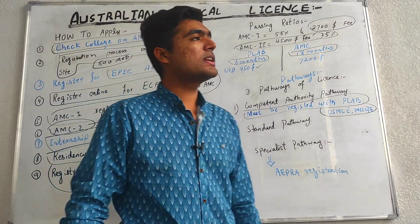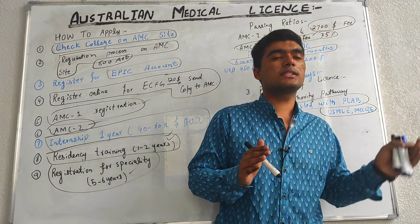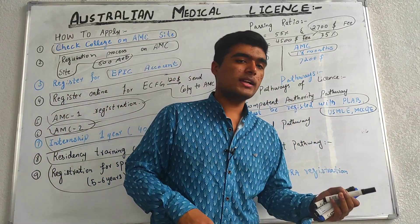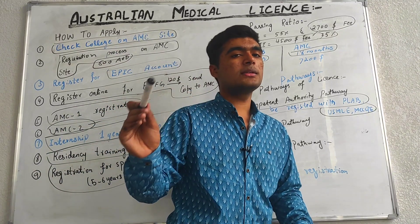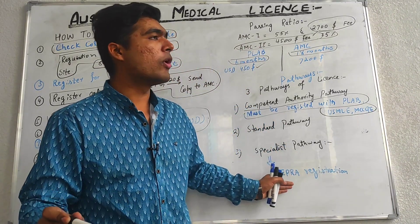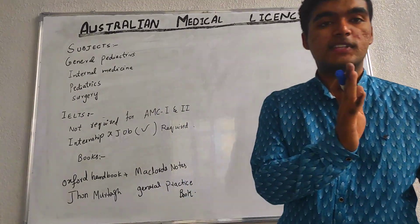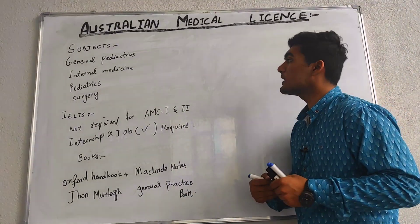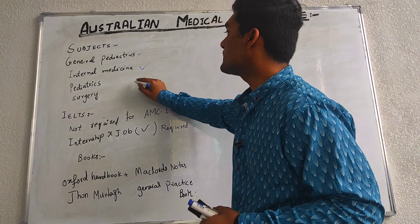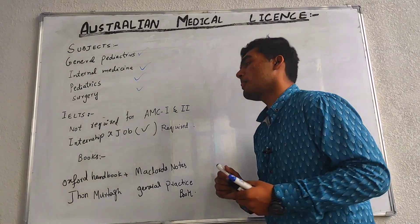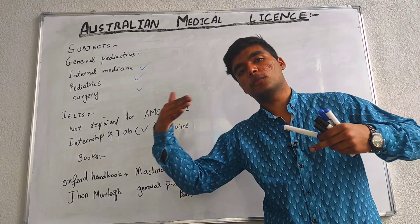The Specialist Pathway is for those who have completed their specialization from recognized countries and are now applying directly. For this pathway, you register with AHPRA and are eligible to work in Australia. Subjects covered in AMC Step 2 include general practice, internal medicine, pediatrics, and surgery, with clinical-based MCQs from these areas.